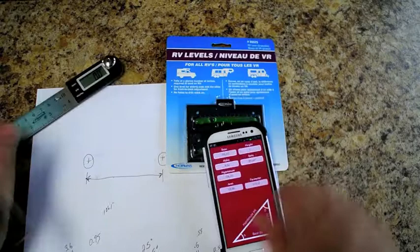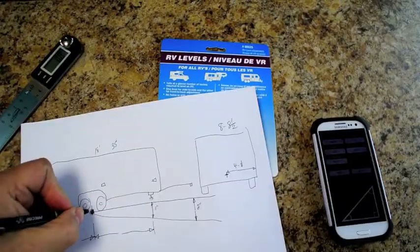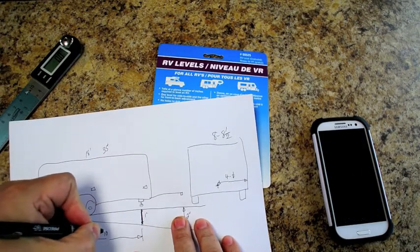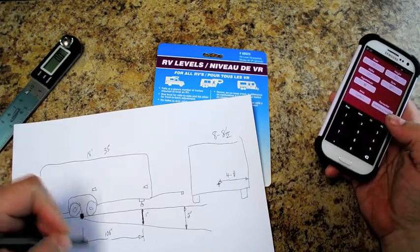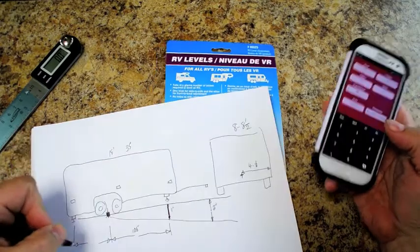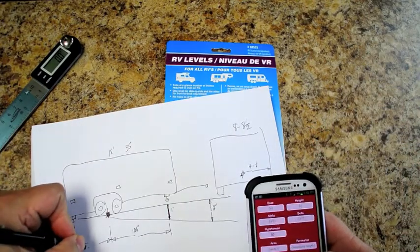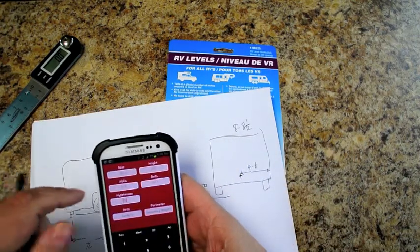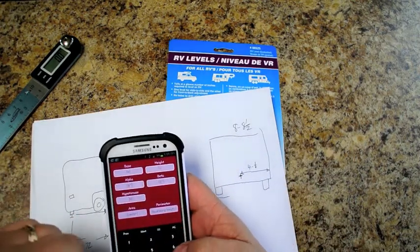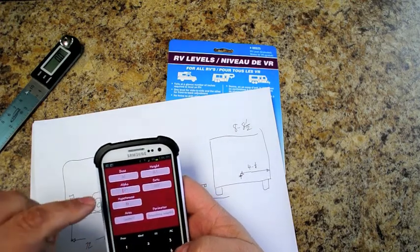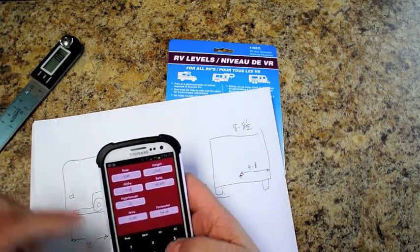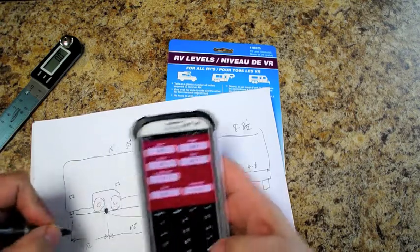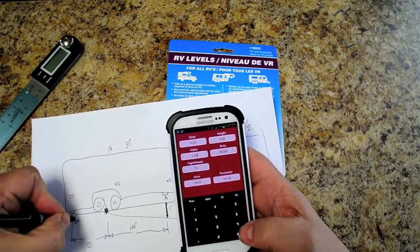So what that says is that from the focal point here to the one inch spot here is 106 inches. But let's say our coach was over here, let's say it was only 72 inches. So if we look at our calculator and do 72 inches with the same 0.54 degree angle, that's going to give us a height of 0.68 inches.